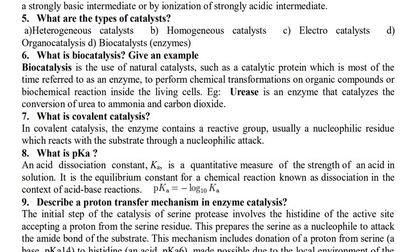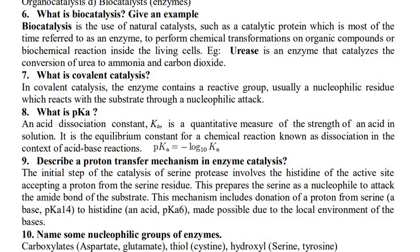Last question: describe a proton transfer mechanism in enzyme catalysis. The initial step of catalysis of serine protease involves the histidine of the active site accepting a proton from the serine residue. This prepares the serine as a nucleophile to attack the amide bond of the substrate. This mechanism includes the donation of a proton from serine, where pKa ~14 of serine and pKa ~6 of histidine are made possible due to the local environment of the active site.